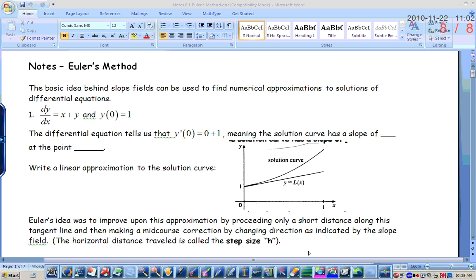Now, this differential equation tells us that y prime of 0, or the derivative at the point (0,1), would equal, plug in the 0 for x, plug in the 1 for y, so it would equal 1. Meaning that the solution curve has a slope of 1 at the point (0,1). So the derivative at that point is 1, so it's basically saying that at the point (0,1), we have a slope of 1.